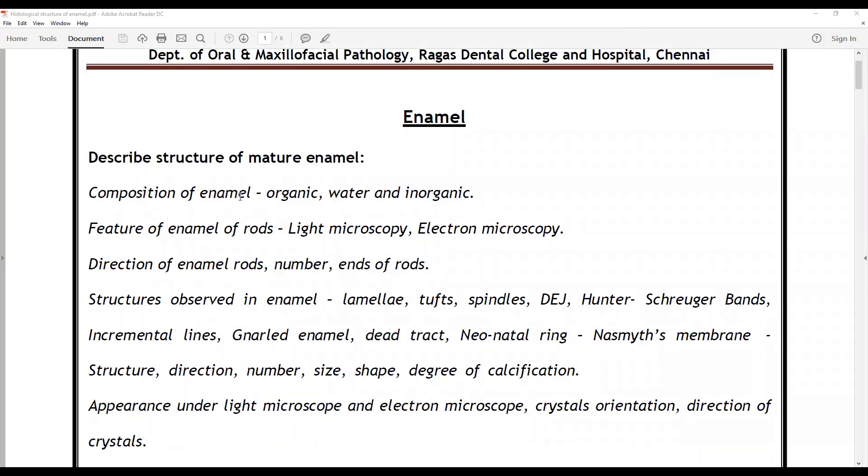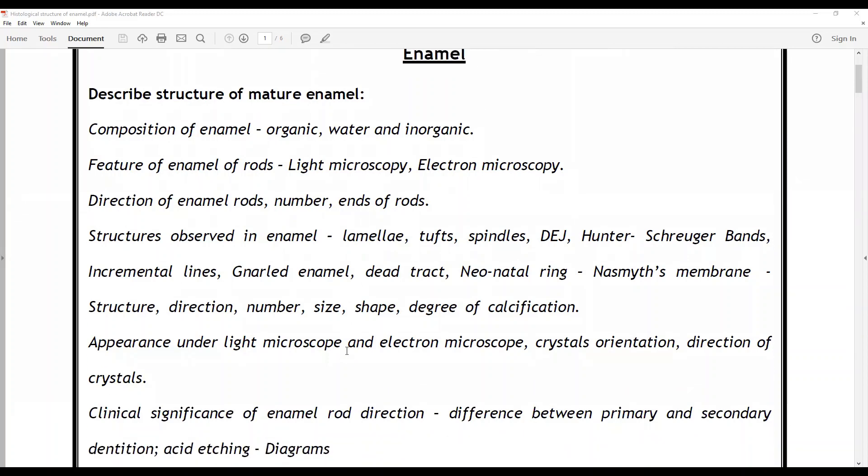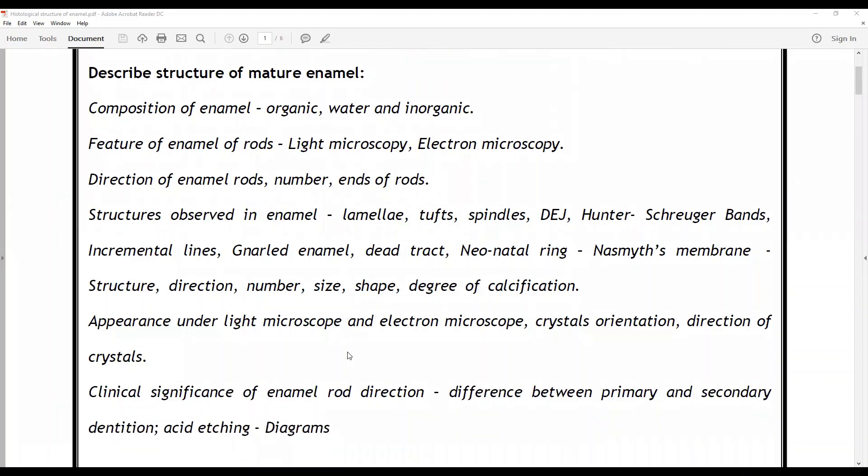If this is asked, you have to talk about the composition of enamel - how much is organic, how much is inorganic, the water content, the feature of enamel rods in light microscopy and electron microscopy, the direction of enamel rods, the rods numbers and the ends of rods, how they look like, the structures observed in the enamel - enamel lamellae, enamel tufts, enamel spindles, dentino enamel junction, Hunter-Schreger bands, incremental lines, gnarled enamel, neonatal ring, Nasmyth's membrane structure, the rod structure, direction, number, size, shape and degree of calcification, the crystals orientations, directions and the clinical significance, the difference between primary and secondary dentitions in terms of enamel rod directions as in etching.